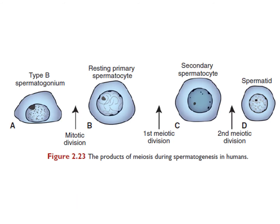To recap, there are two types of spermatogonia: type A and type B. Type B differentiates into primary spermatocytes, which undergo meiosis I to form the haploid secondary spermatocyte. This undergoes the second meiotic division to form spermatids, which will later mature to become spermatozoa.